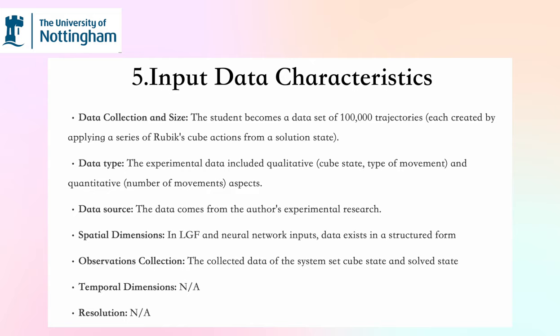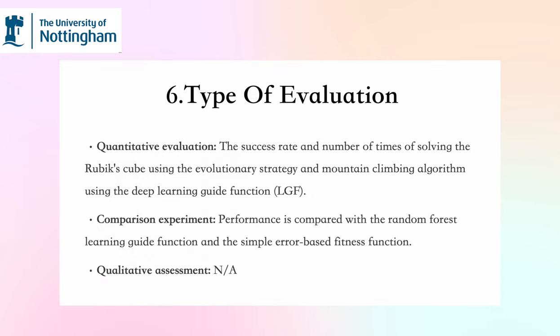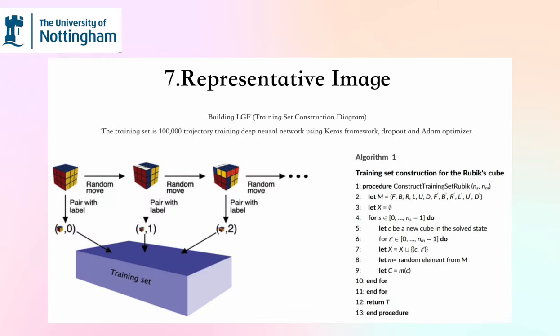For observation collection, the collected data covers system states, cube states, and solve states after evolutionary steps. Quantitative evaluation and comparison experiments are also performed. The training set consists of 100,000 trajectories.